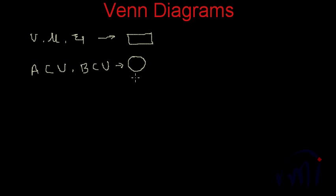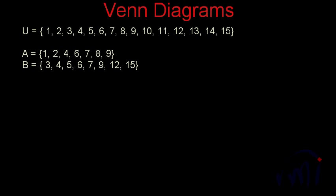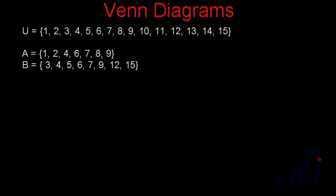Let's take a few examples to understand this better. Suppose we have one universal set U whose elements are the numbers from 1 to 15. I have also defined two subsets: set A has elements 1, 2, 4, 6, 7, 8, and 9, and set B has elements 3, 4, 5, 6, 7, 9, 12, and 15. These are the two sets drawn from the universal set.